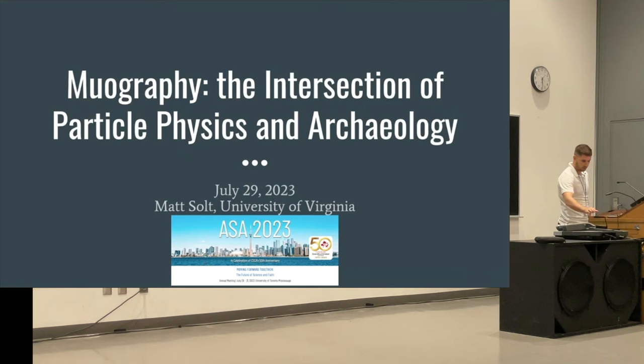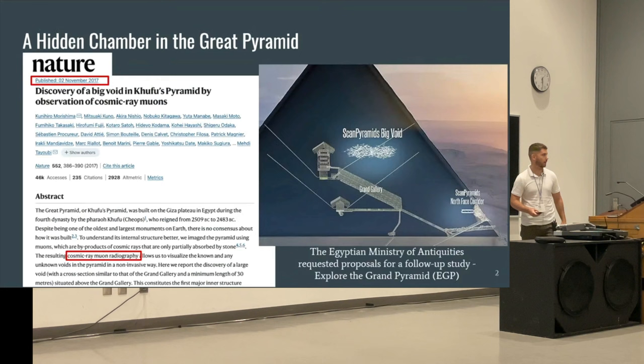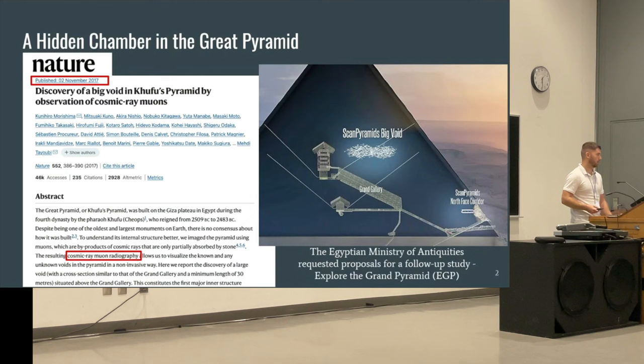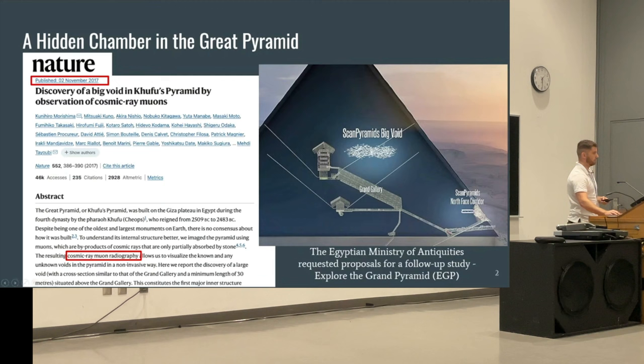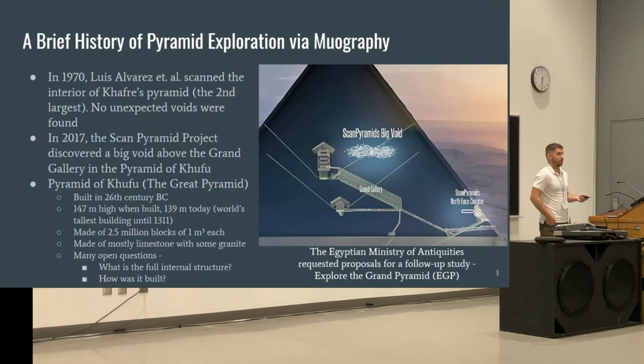The story begins in 2017, when the ScanPyramid collaboration claimed a discovery of a big void within the Great Pyramid. They were able to do this through a concept called cosmic ray muography, which uses cosmic rays from the upper atmosphere that penetrate deep structures. You can detect these muons at the surface and draw conclusions about the interior of a pyramid or really any structure.